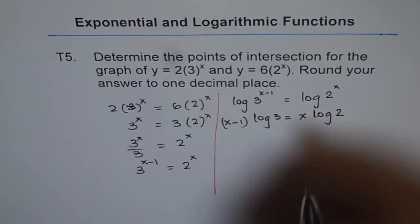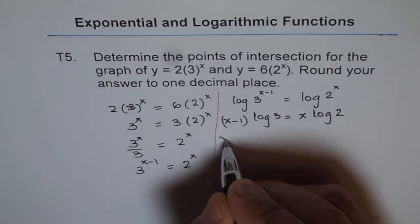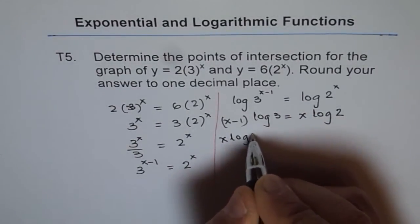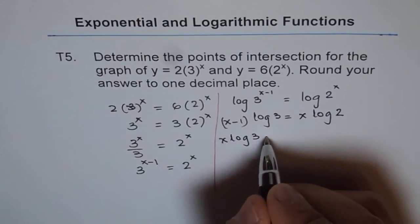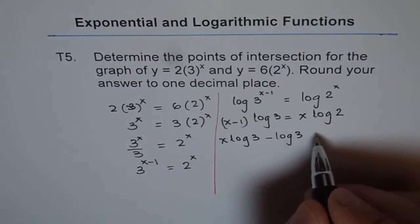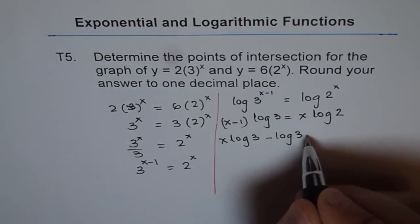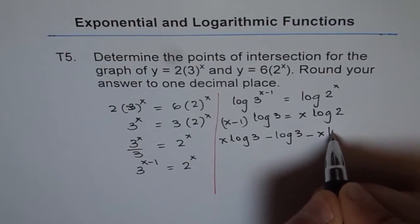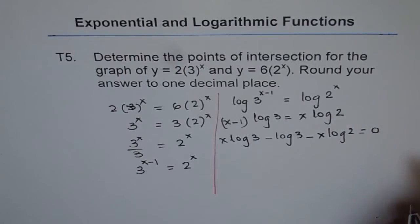So it could be written as x log 3 minus log 3 minus x log 2 equals 0.